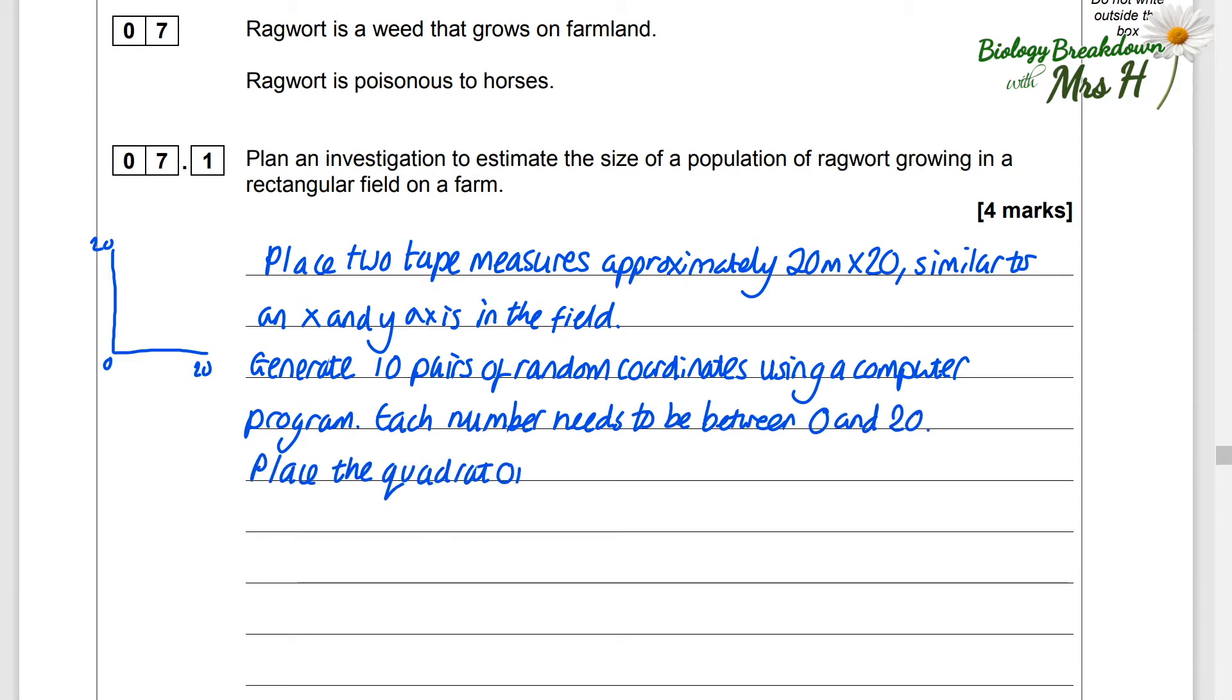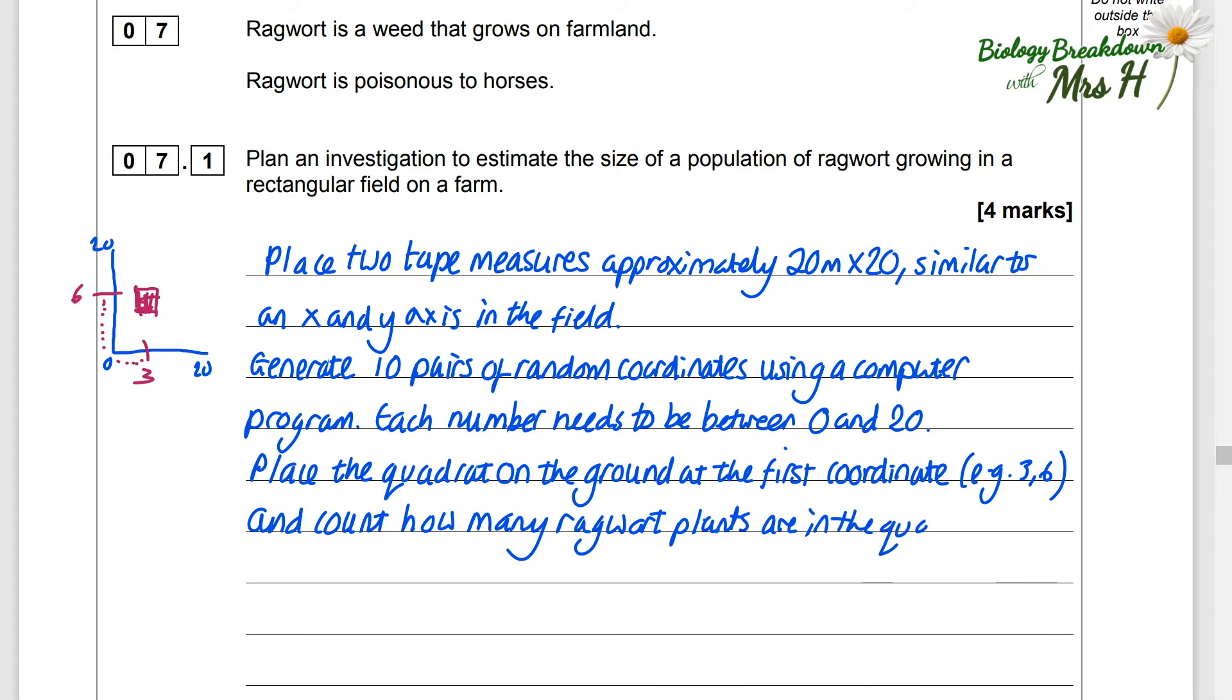Place the quadrat on the ground at the first coordinate. If you've randomly chosen a pair of coordinates which are 3 and 6, then you move along the tape measure 3, your partner can move up 6, and then you can walk towards and meet each other and pop the quadrat down at that coordinate there. Then you can count how many ragwort plants are in the quadrat. Record the results in a table and repeat this method until 10 quadrats have been placed in the area.